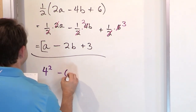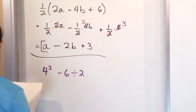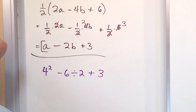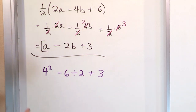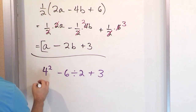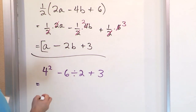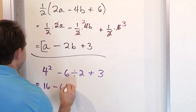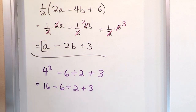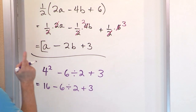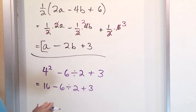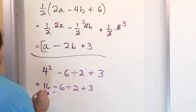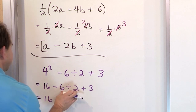Next problem: 4 squared minus 6 divided by 2 plus 3. We have to deal with order of operations. First is parentheses — we don't have any. Next is exponents — we do have one, so we do that first. 4 squared means 4 times 4, which is 16. Carry the rest of the problem through. Don't get in a hurry to do too many things at once. Next is multiplication and division, so I can't do the subtraction or addition yet. 16 minus, what is 6 divided by 2? That's 3, plus 3 at the end.